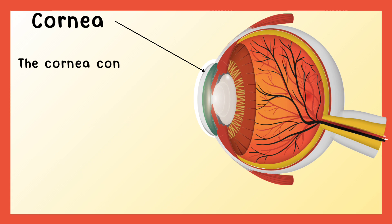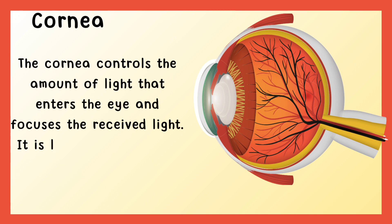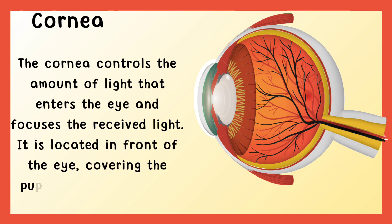Cornea. The cornea controls the amount of light that enters the eye and focuses the received light. It is located in front of the eye, covering the pupil, iris, and interior chamber.